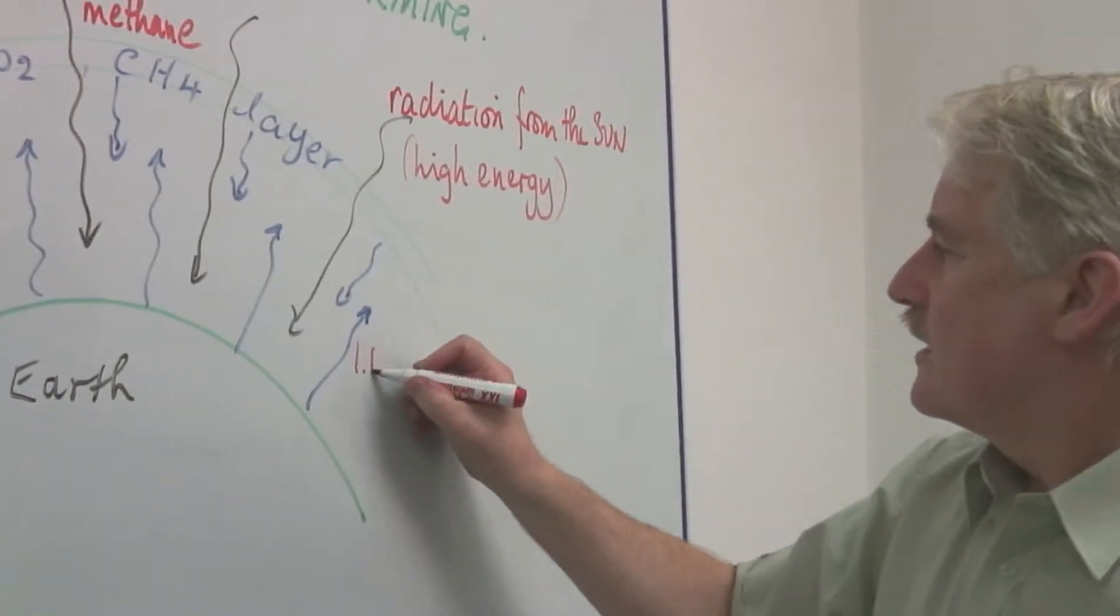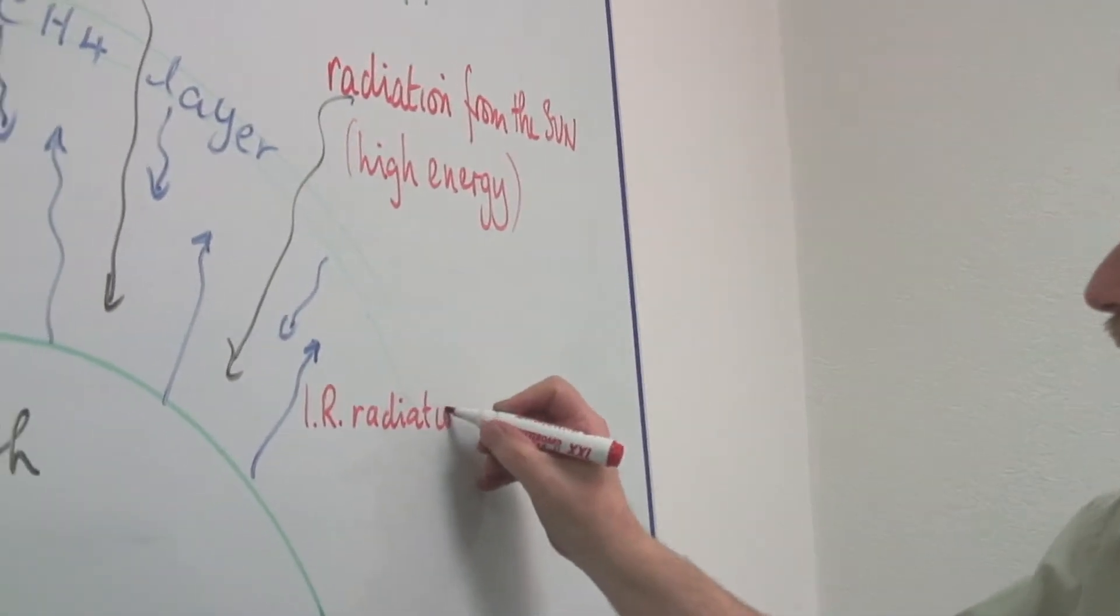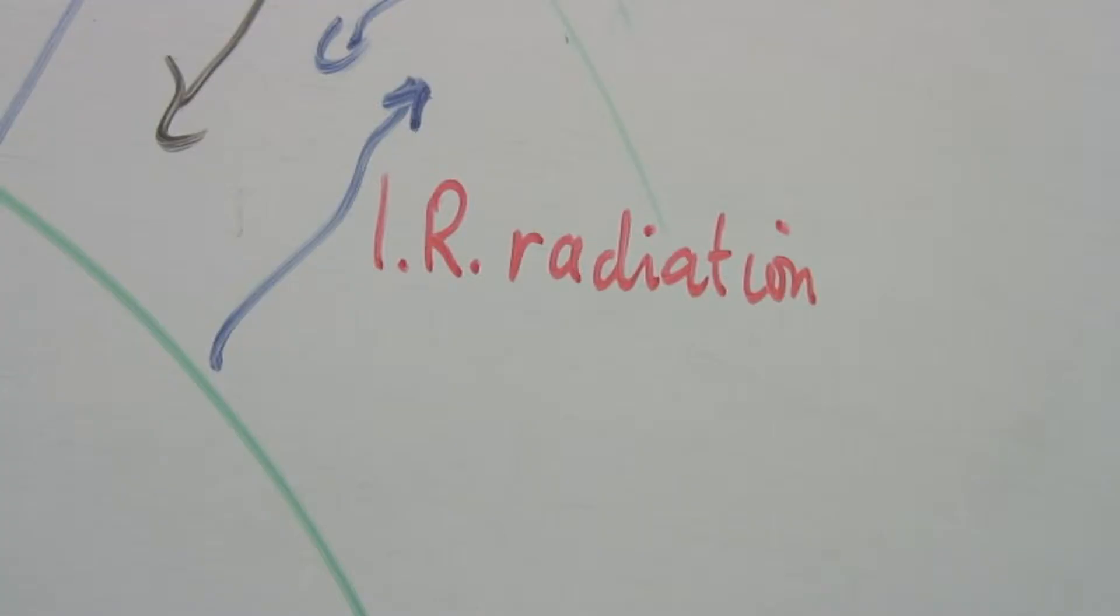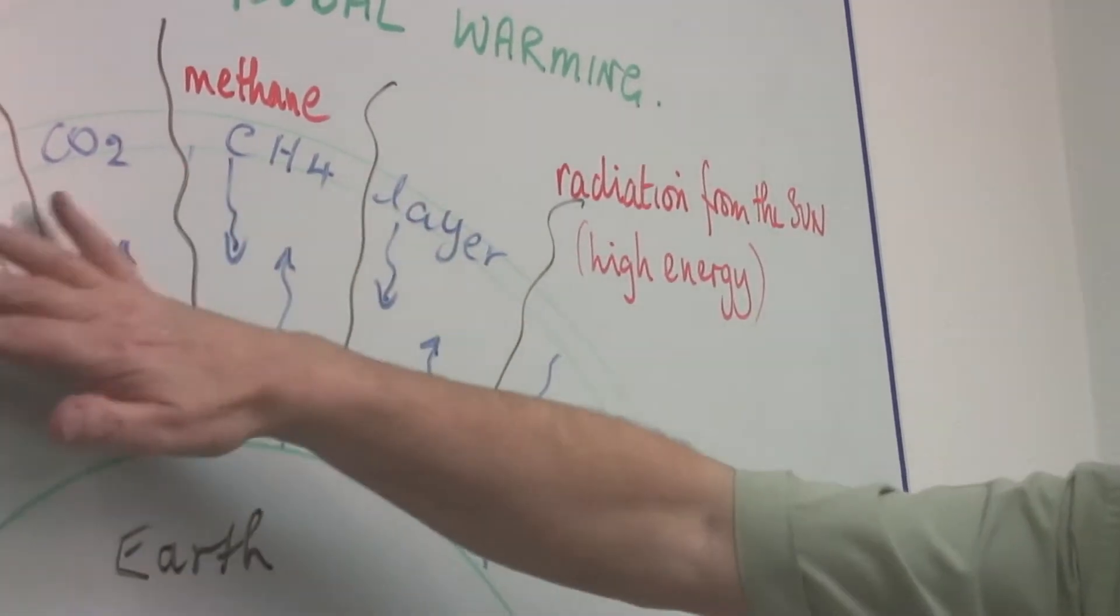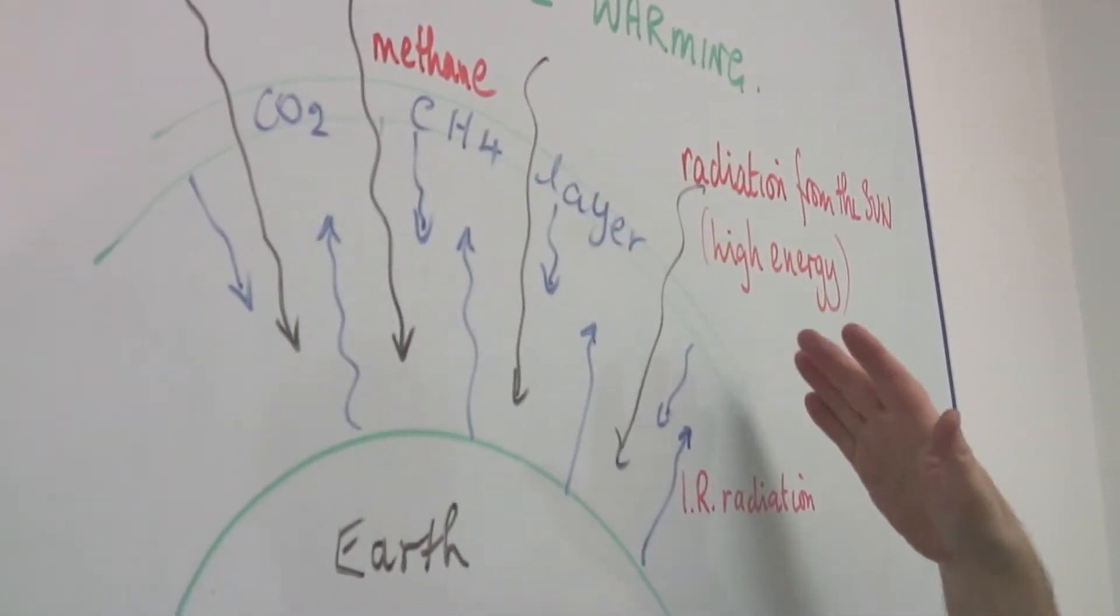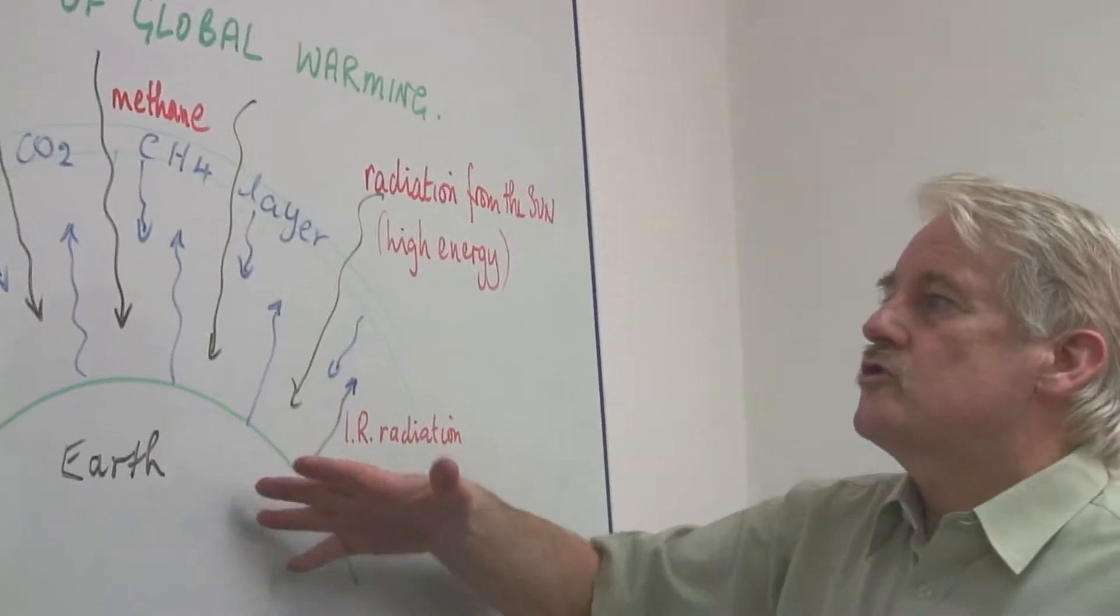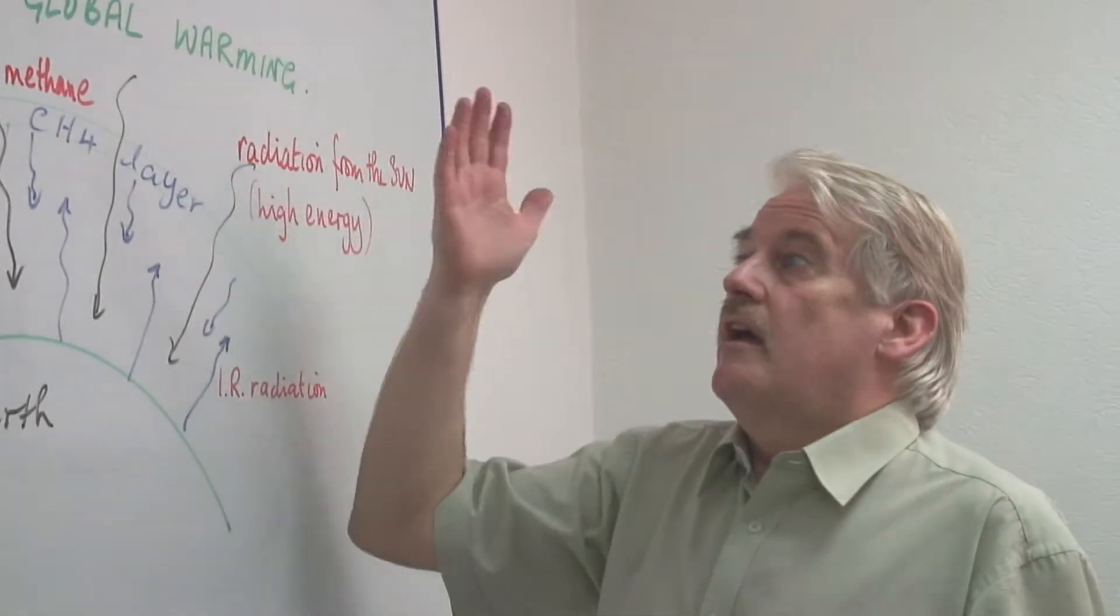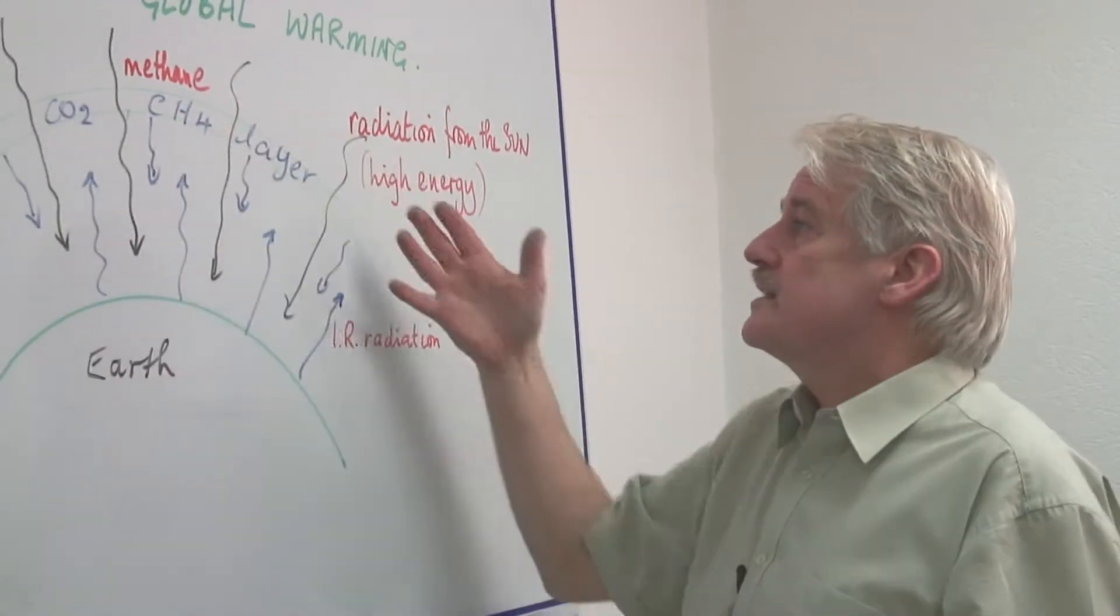And this is infrared radiation which is emitted from the earth and low energy radiations. The problem we have is that if this layer here of carbon dioxide, methane and other similar gases is very thick then these radiations which come from the earth cannot escape from the atmosphere. They are absorbed in these layers.